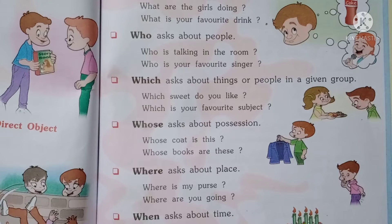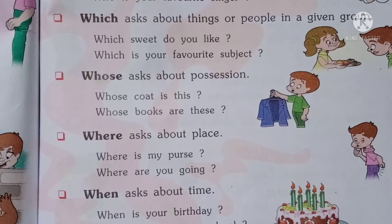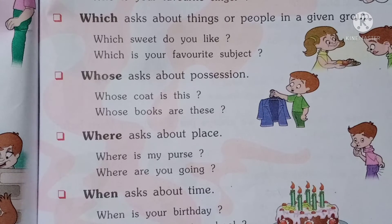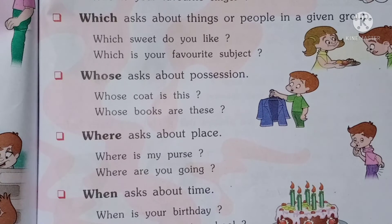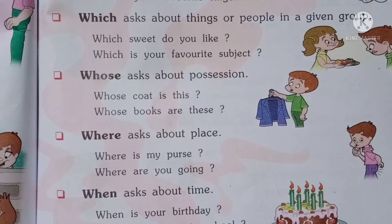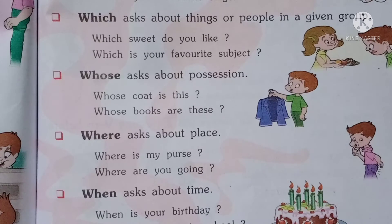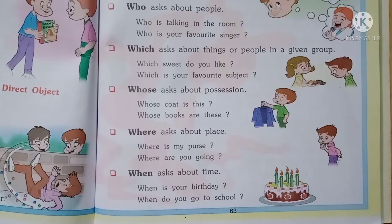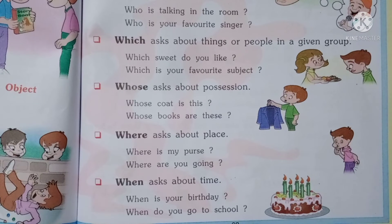The next word is 'whose' (W-H-O-S-E). The word 'whose' is used to ask about ownership or possession. For example: whose coat is this? Whose books are these? Whose car is standing in my gate? Whose books are on my table? We use 'whose' to ask about the ownership of things belonging to any person.